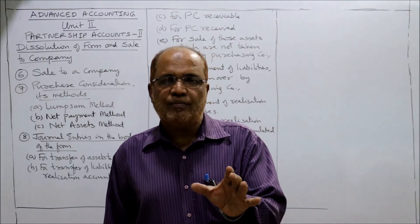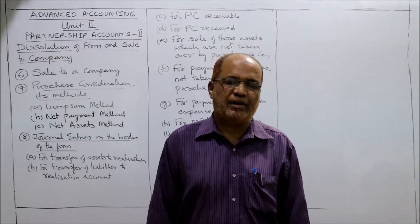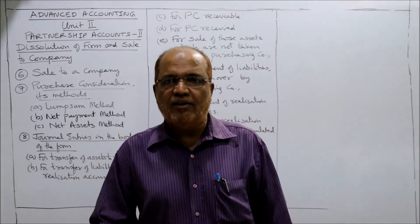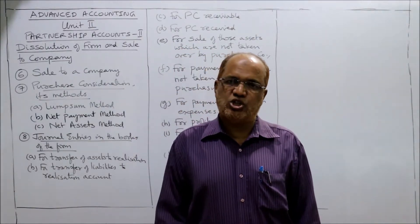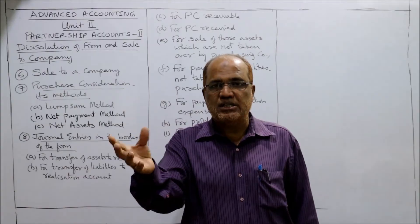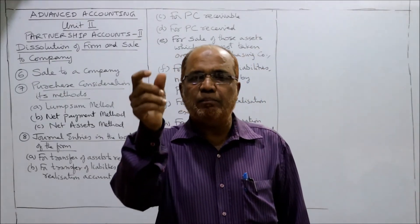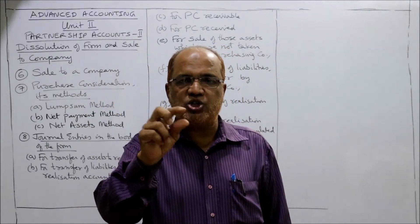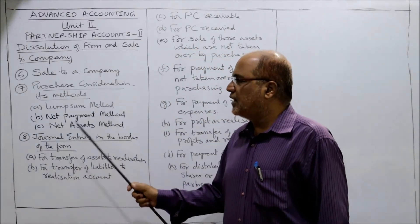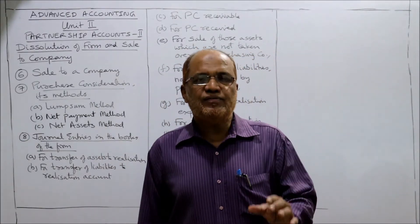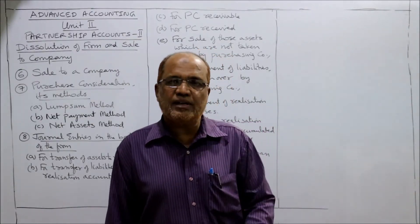The second method is the net payment method. This is applied whenever the purchasing company specifies all the different forms of payment. For example: five lakh rupees cash, ten lakh rupees equity shares, and two lakh rupees debentures. You simply add up how much cash is paid, how many shares are issued, and how many debentures are issued. This total is called net payment.